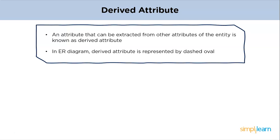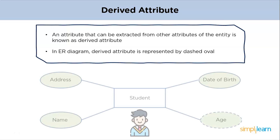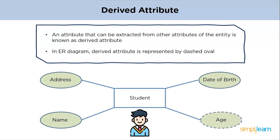An attribute that can be derived from other attributes of the entity is known as a derived attribute, represented by a dashed oval in the ER diagram. In the example, the student entity has both date of birth and age as attributes. Here, age is a derived attribute as it can be derived by subtracting the current date from the student's date of birth.